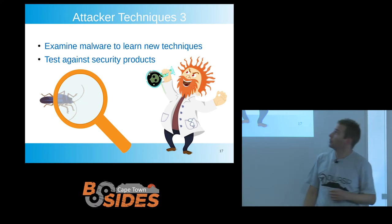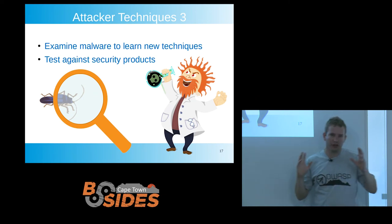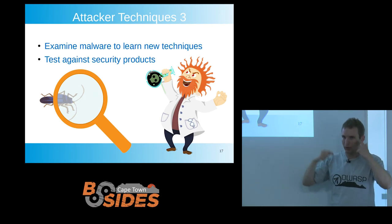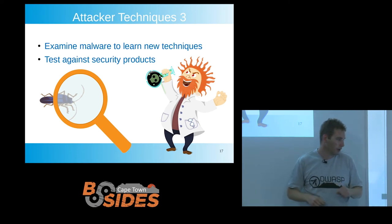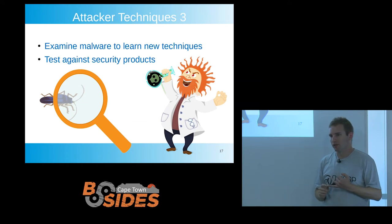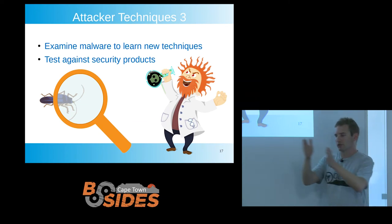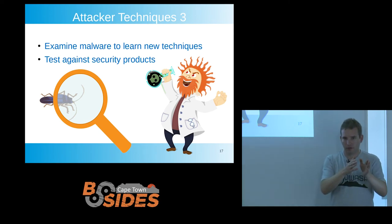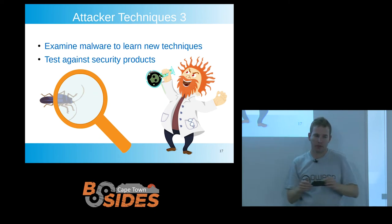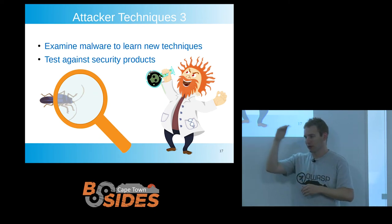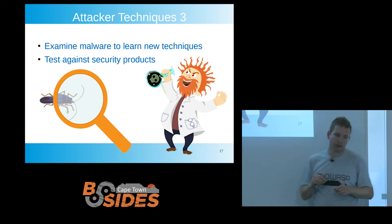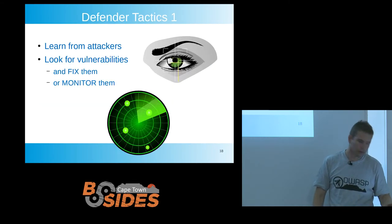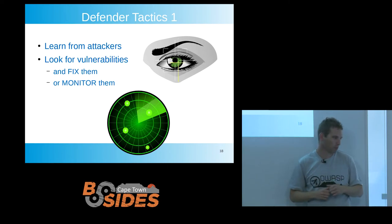On what attackers are doing: examining malware to learn new techniques. The CIA was outsourcing this — another company was going through new malware coming out, identifying new techniques they hadn't seen before, and incorporating them into their software. They also do a lot of testing against security products — not just McAfee versus Kaspersky versus Norton, but McAfee Standard Edition versus Enterprise Edition, with and without an internet connection, because anti-malware software behaves differently. They keep testing until it goes through undetected. That gives you pause for thought about how good the software you've got actually is.